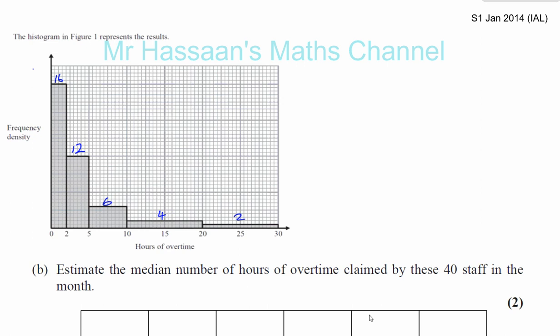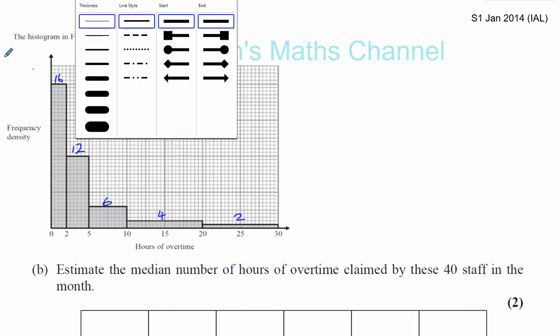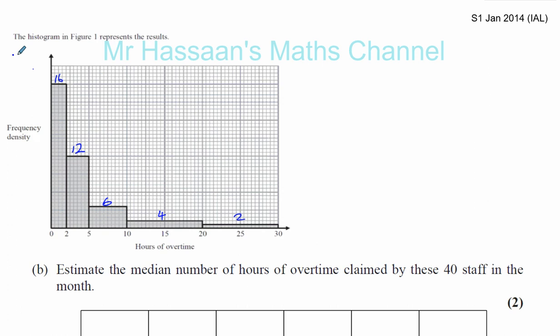Now we have question number eight, continuation, and we're going to do part B. It says: estimate the median number of hours of overtime claimed by these 40 staff in the month. So this is January 2014, IAL, question number eight, part B.